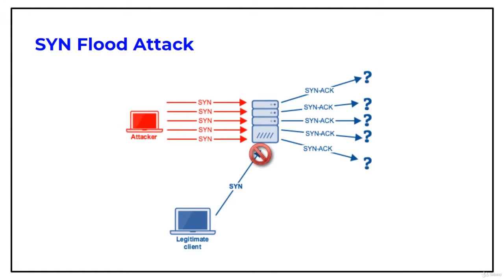The next is SYN flood attack. The attacker sends a large number of SYN requests to a target server — the victim — with fake source IP addresses. The target machine sends back a SYN-ACK in response to the request and waits for the ACK to complete session setup. The target machine does not get the response because the source address is fake.